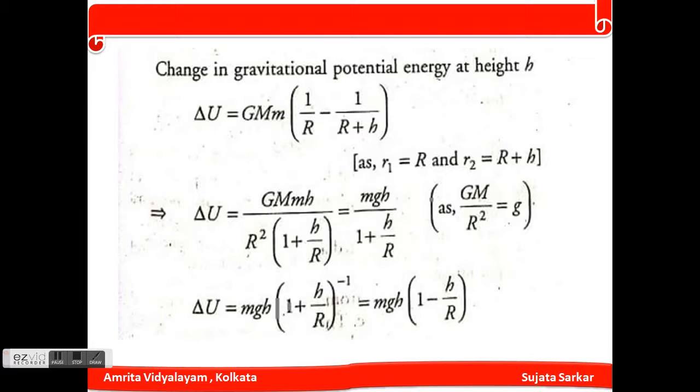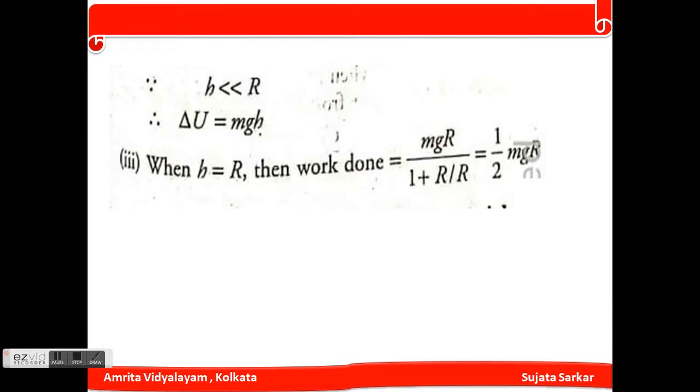Which is equivalent to when h is much much smaller than R, or we can say that delta U equals mgh. Where h equals R, we can write mgR divided by 1 plus R by R, which is equivalent to half mgR.